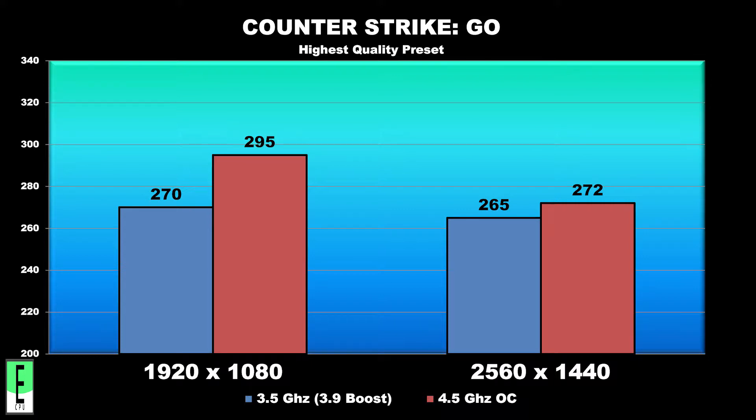So there you have it — overclocking absolutely makes a difference in gaming, but in a similar way to how RAM speed makes a difference. Basically, the lower the resolution and the less graphically demanding your game, the more overclocking is going to have an effect on frame rate. So if you're thinking about overclocking your CPU, or perhaps building a new computer with overclocking in mind, the first thing you need to look at is which CPU you have or plan to go with.